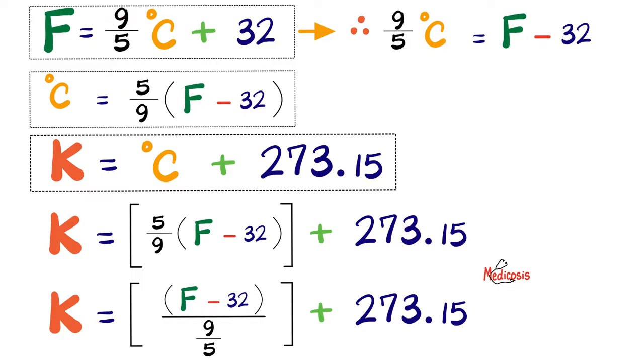You will recall from the last video that if I have the temperature in Celsius and I want to convert it to Fahrenheit, you multiply that Celsius by 9 over 5, add to that 32, you get the degrees in Fahrenheit. Now, what if I do have Fahrenheit but I want to convert it to Celsius, just rearrange the equation.